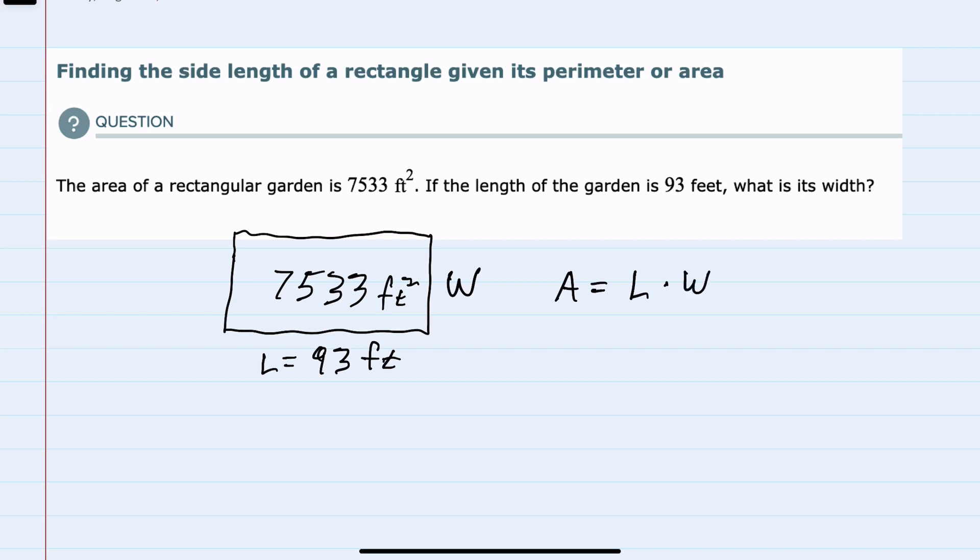So our area of 7,533 will be equal to the length, which is 93, times the width. The variable that we're solving for is W.